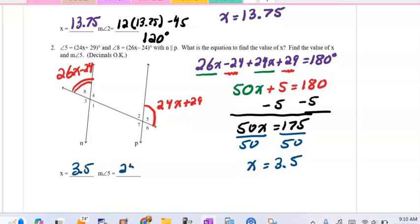Then to get angle 2, we're going to do 24 times 3.5 plus 29. When you do that on your calculator, you're going to get 113 for angle 5.